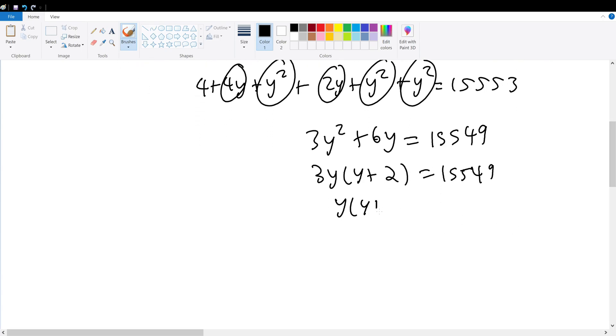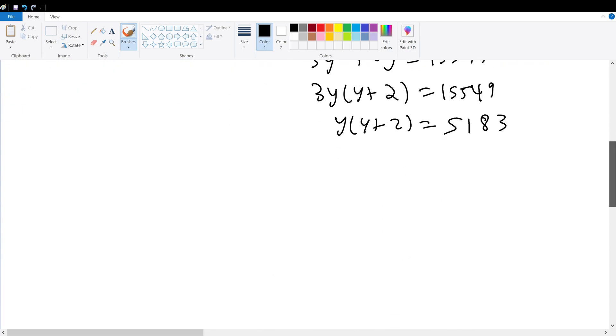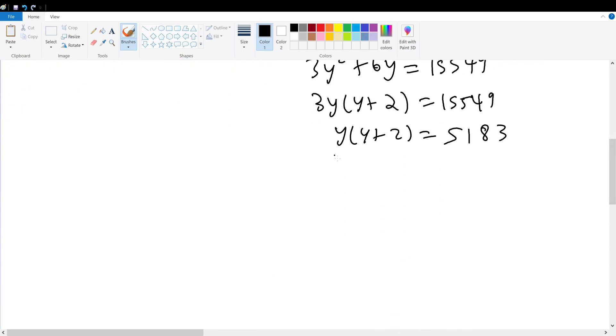Now I've simplified it to its least possible form in terms of y. I know that there must be two numbers here, and that they must be prime, because remember y is defined to be a prime number. So that must mean that the multiplication of two numbers gives 5183.